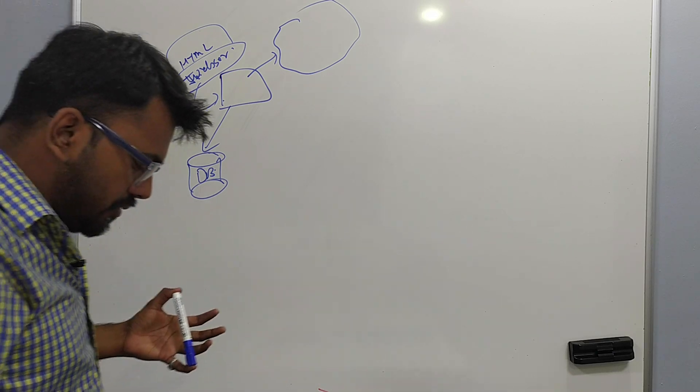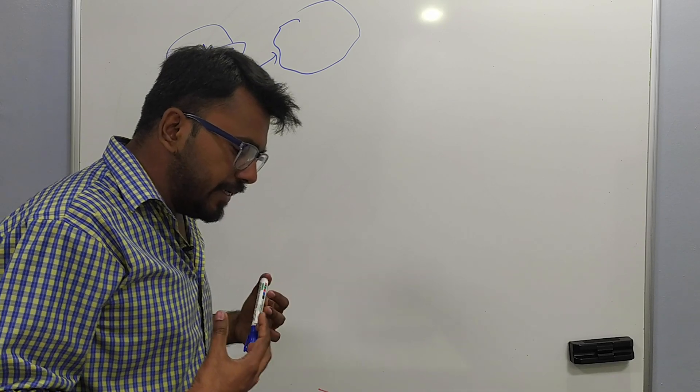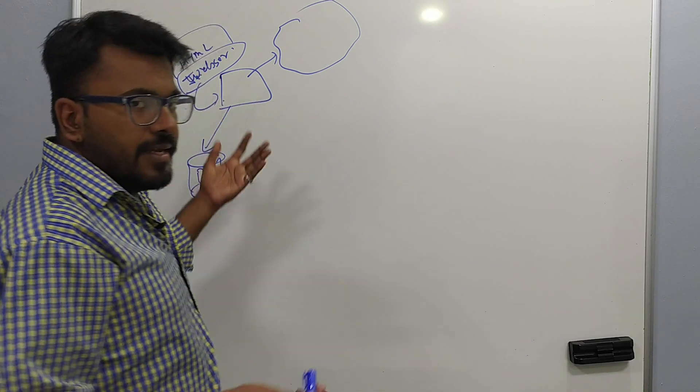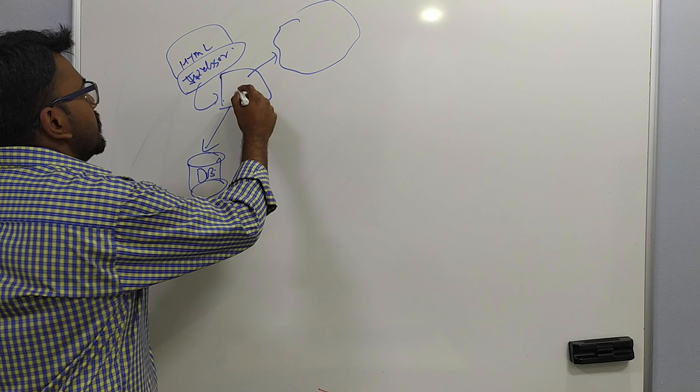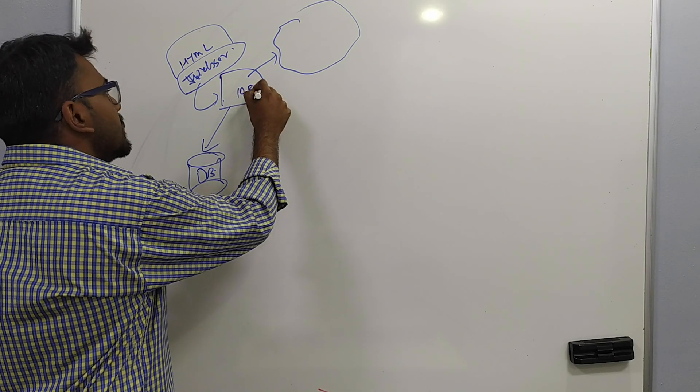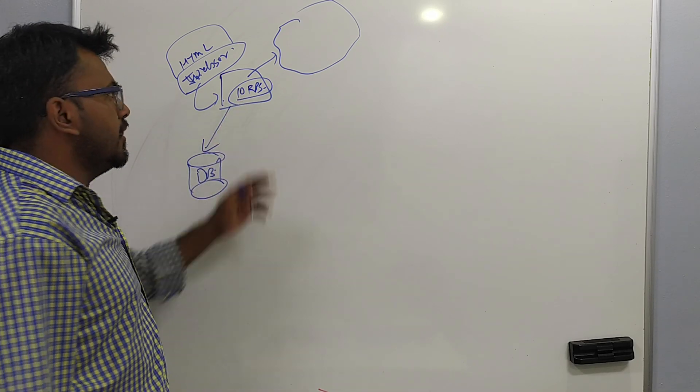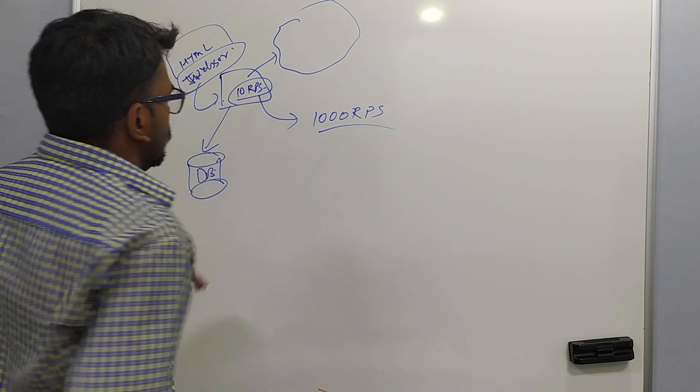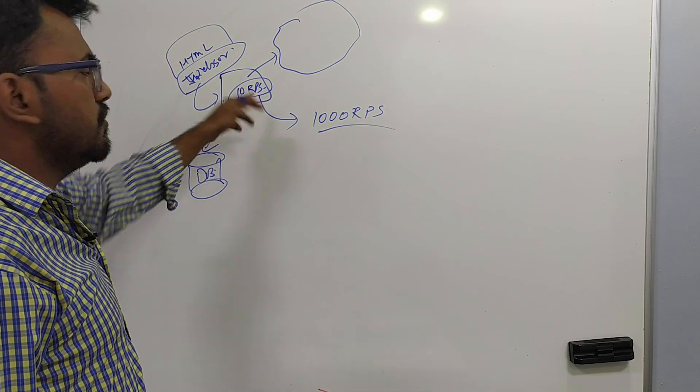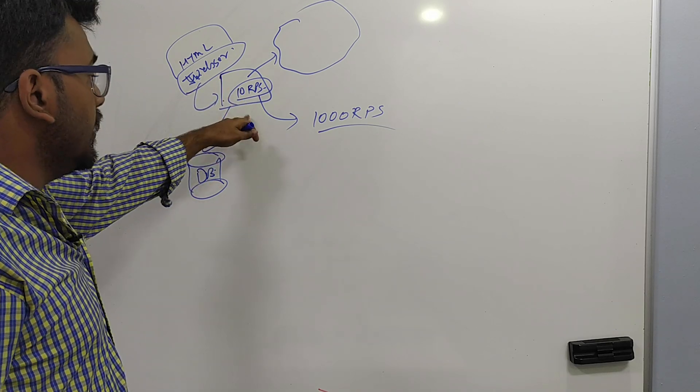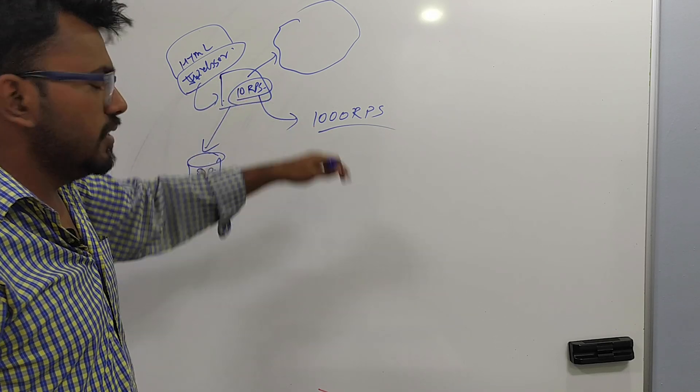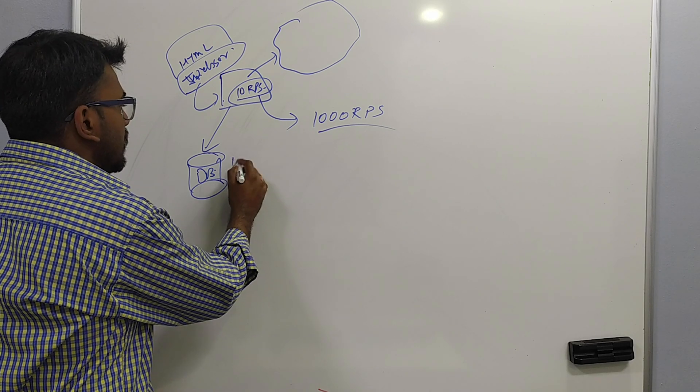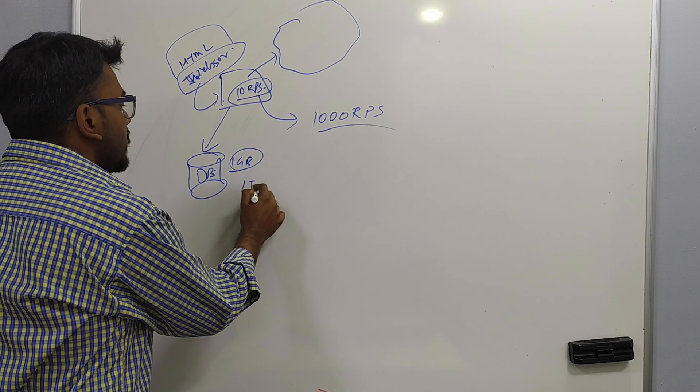Now as the internet becomes popular and goes to the hands of more and more people, the load on your server will increase. So when it was 10 RPS, it was easily able to handle your load. Now the load becomes 1000 RPS. Obviously the system which you were using earlier was able to handle 10 RPS load, but since the load has increased, amount of data will also get increased. So earlier if it was only 1 GB, now you might need 1 TB amount of data.